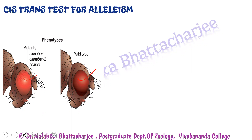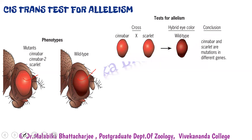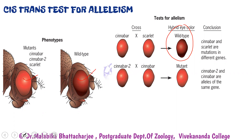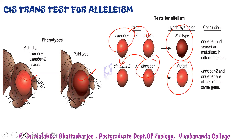We cross the mutants. In the first cross, we cross a cinnabar fly with a scarlet fly, and we get wild type flies with wild type eye color. So cinnabar and scarlet mutations are in different genes. In the second cross, we cross cinnabar 2 with cinnabar. Interestingly, the product is a mutant fly. The take home message is that cinnabar 2 and cinnabar mutations are alleles of the same gene — both mutations are present in the same gene.